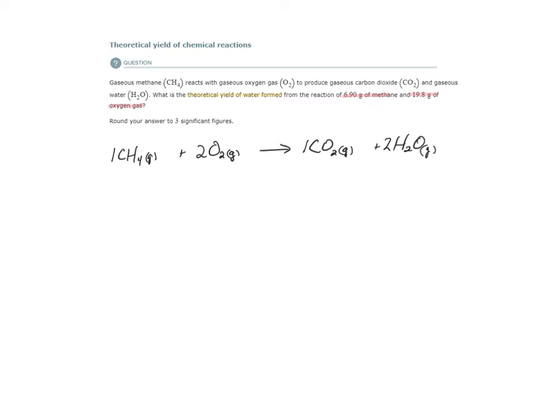Now let's look at the given amounts. We have 6.90 grams of methane and 19.8 grams of oxygen gas. What's the theoretical yield of water formed? They didn't indicate mass, so I would assume you could report this in either moles or grams. To be safe and for good practice, I'm going to get our theoretical yield as a mass in grams.